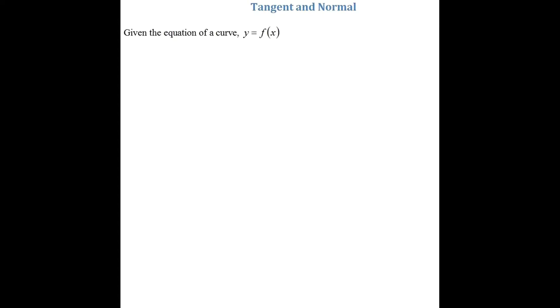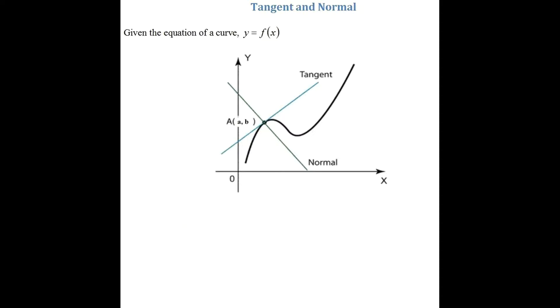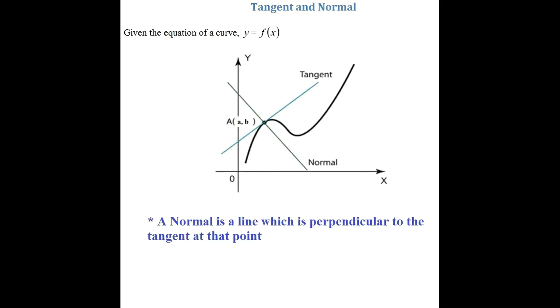In this video I'm going to discuss tangents and normals. If we're given an equation of the curve y equals f of x, I have a diagram over here. The blue line is the tangent to the curve at the point (a, b). A tangent is a line which crosses a curve at one point. The green line is the normal to the curve at the point (a, b). A normal is a line which is perpendicular to the tangent and passes through the same point as the tangent.